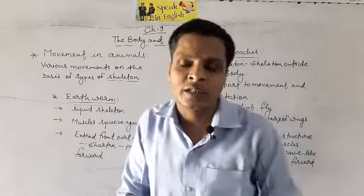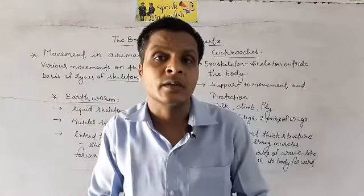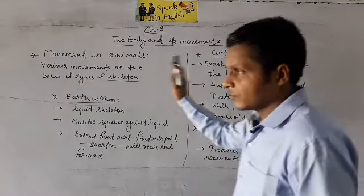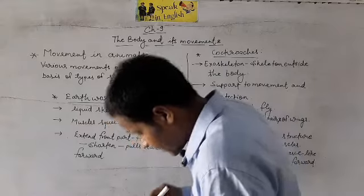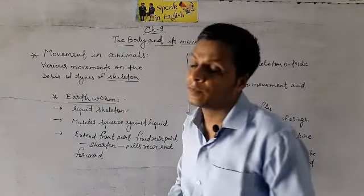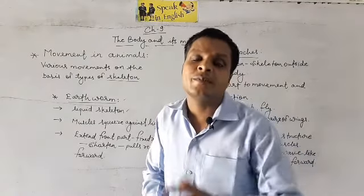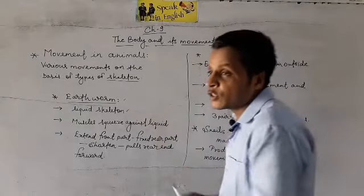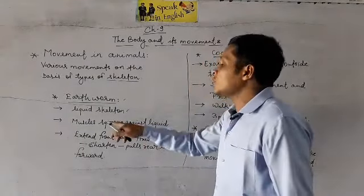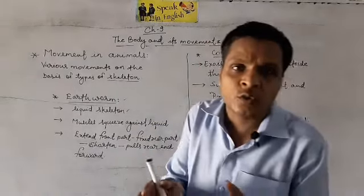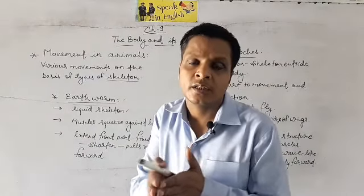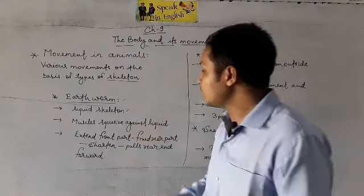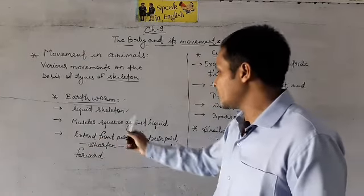You would have observed that there are many animals and insects that move in different ways. We start with the earthworm. When the muscles squeeze against liquid, what happens? The front part extends.